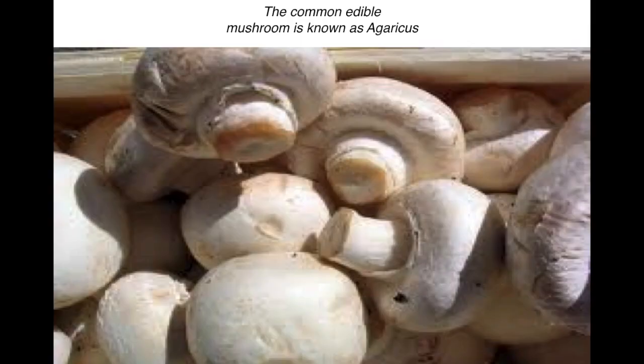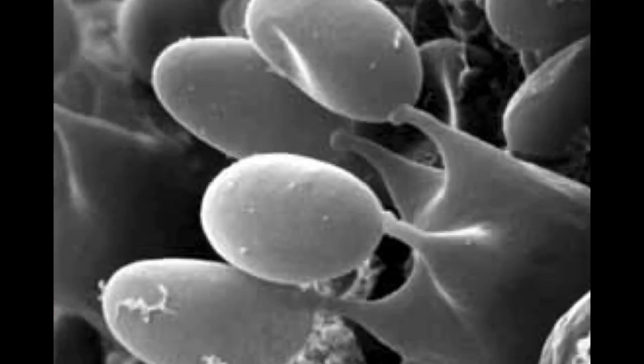The common edible mushroom is called Agaricus — this is your pizza mushroom. Inside that mushroom you have little club structures that hold the spores, which is why they're called Basidiomycetes, because of these little clubs in the reproductive parts. Fungi are classified by their reproductive structures.